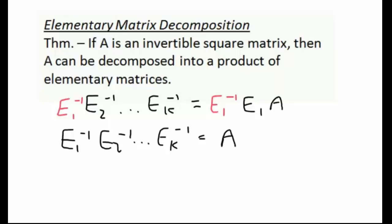So now what we have is we have A as a product of elementary matrices. And that's because of a theorem that we saw in the last lesson. The inverse of all of these elementary matrices are also going to be elementary. So we have A decomposed as a product of elementary matrices.